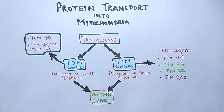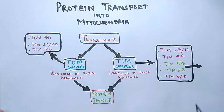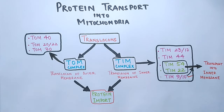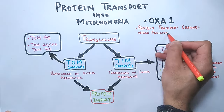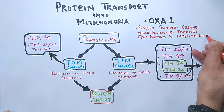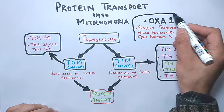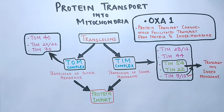It must be noted that all the translocons do not exist in a single pathway — different pathways are used. TIM54 and TIM22 facilitate transport into the inner mitochondrial membrane with the help of TIM9 and TIM10. Apart from these complexes, there is another transport molecule called OXA-1, a protein transport channel that facilitates transport from the mitochondrial matrix to the inner mitochondrial membrane, acting as a mitochondrial inner membrane insertase.